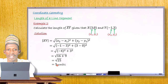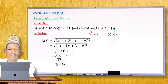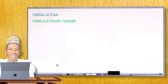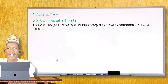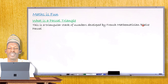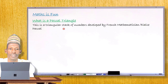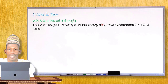Thank you for your attention. Let us now move to the last segment — the Fun section — which is Pascal's Triangle. Pascal's Triangle is a triangular arrangement of numbers developed by the French mathematician Blaise Pascal. The name 'Pascal's Triangle' comes directly from his name.